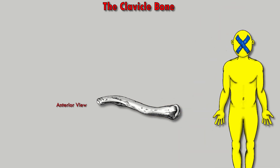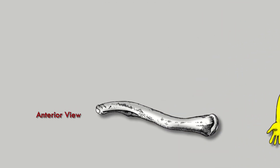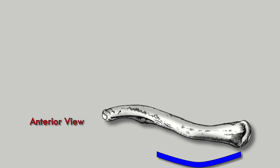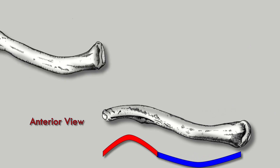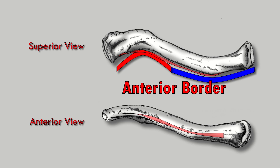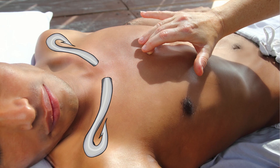If you're looking at the clavicle from an anatomical position — staring at the anterior border — the medial portion is going to be convex and the lateral portion is going to be concave. The convex and concave curvature of the clavicle almost makes it look like two giant fish hooks coming out of your sternum, if you break off the ends of the fish hooks.